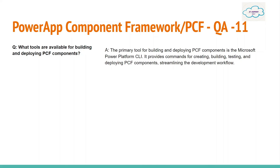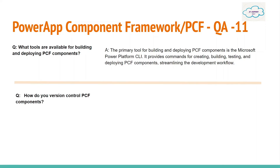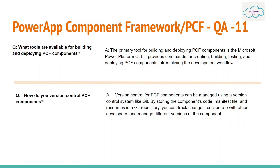The primary tool for building and deploying PCF components is the Microsoft Power Platform CLI. It provides commands for creating, building, testing, and deploying PCF components, streamlining the development workflow. Question: How do you version control PCF components? Version control can be managed using systems like Git by storing the component code, manifest file, and other assets in a Git repository.